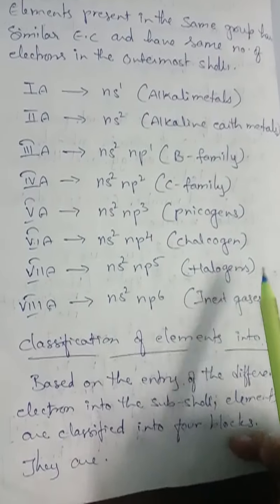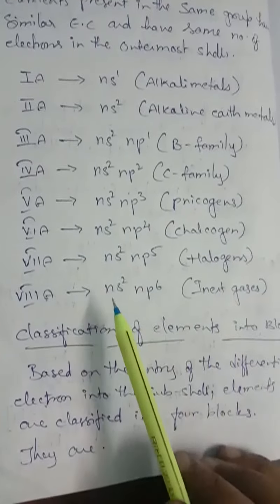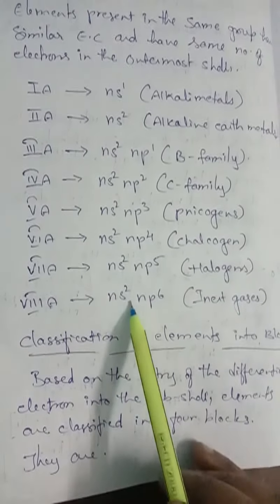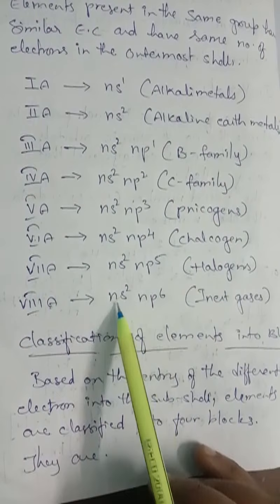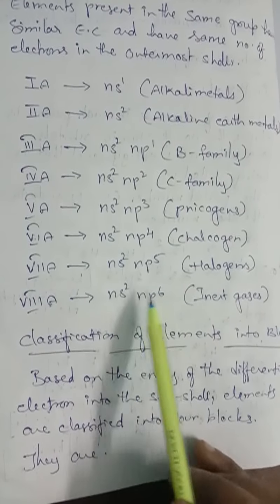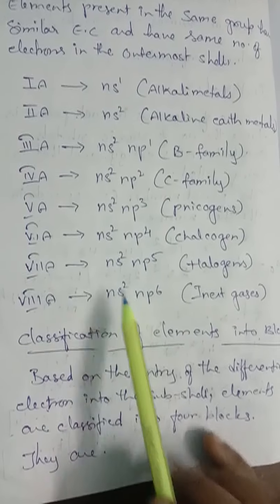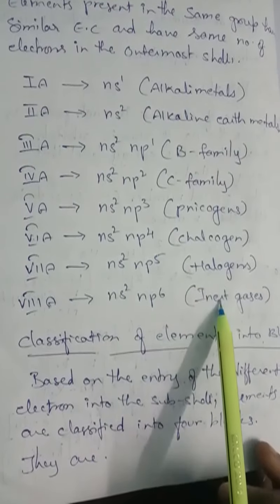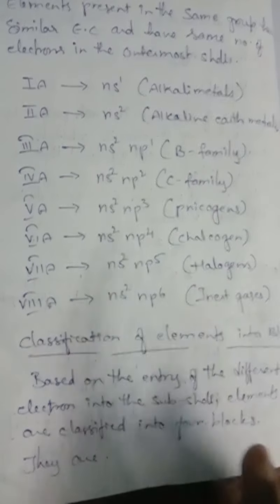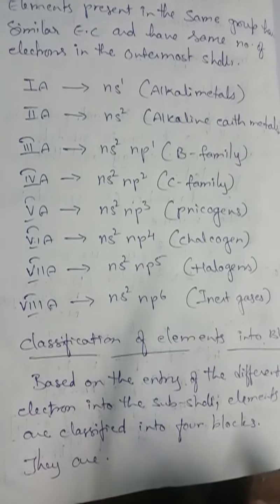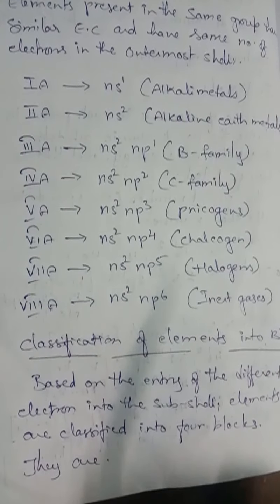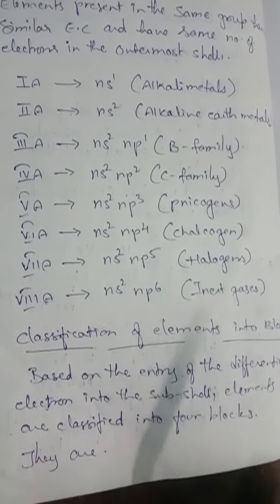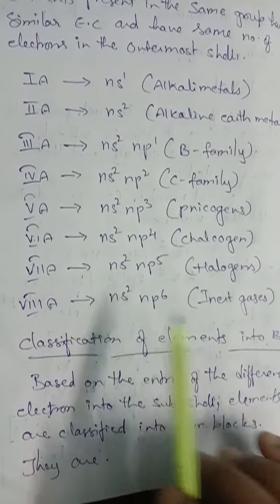Group 8A elements are also known as inert gases. The outermost electronic configuration is ns2, np6, which is completely filled. When an element is completely filled, it acts as an inert gas. These are helium, neon, argon, krypton, xenon, and radon — all are inert gases.